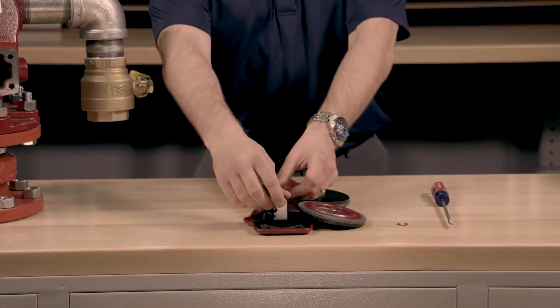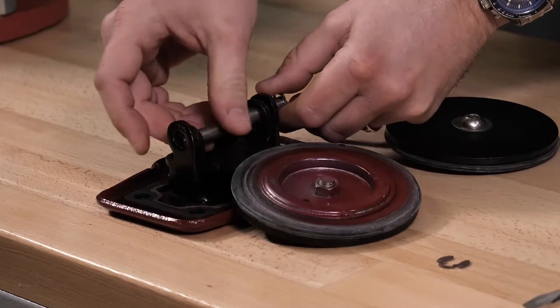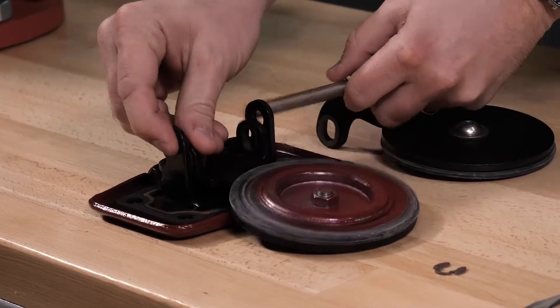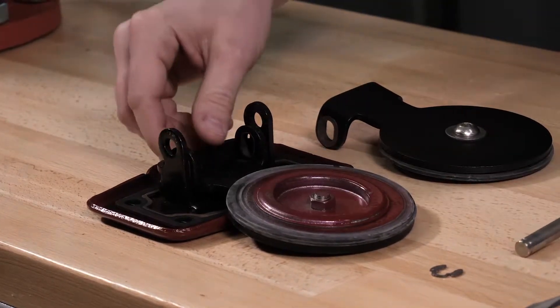We can now push the clapper hinge pin out of the holes of the clapper assembly to remove the existing clapper assembly from the cover.